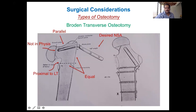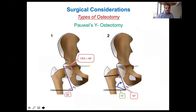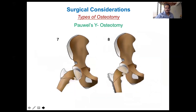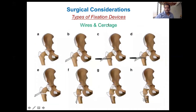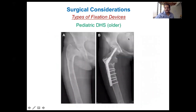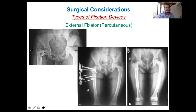The different types of osteotomy include the broad transverse osteotomy, where a transverse osteotomy is performed and the proximal segment is brought into varus while the distal segment is brought into valgus to achieve the desired neck shaft angle, ensuring the blade does not extend into the physis. There is also Powell's Y-osteotomy, which is a more complex procedure. Fixation options include wires inserted parallel to the upper margin of the neck — bent to the desired angle and fixed by cerclage — a blade plate, a pediatric DHS for older patients, or a skeletal external fixator allowing percutaneous osteotomy.